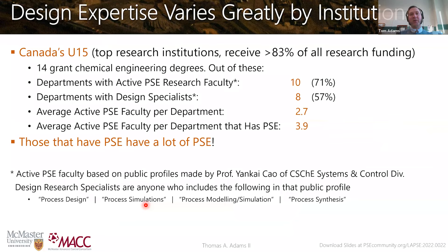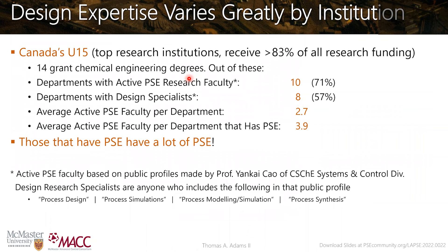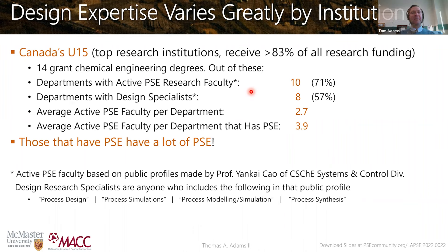I have data for Canada — specifically the U15, our top 15 research institutions, which collectively receive 83% or more of all research funding. Of these, 14 grant a chemical engineering degree. About 10 of these 14 departments have what I would call active PSE research faculty — someone doing research regularly in process systems engineering, whether in design, controls, optimization, or modeling. That's about 70% that have somebody. I would call those people highly qualified to teach design courses. About eight have someone I'd call a design specialist like me, which is just over half.